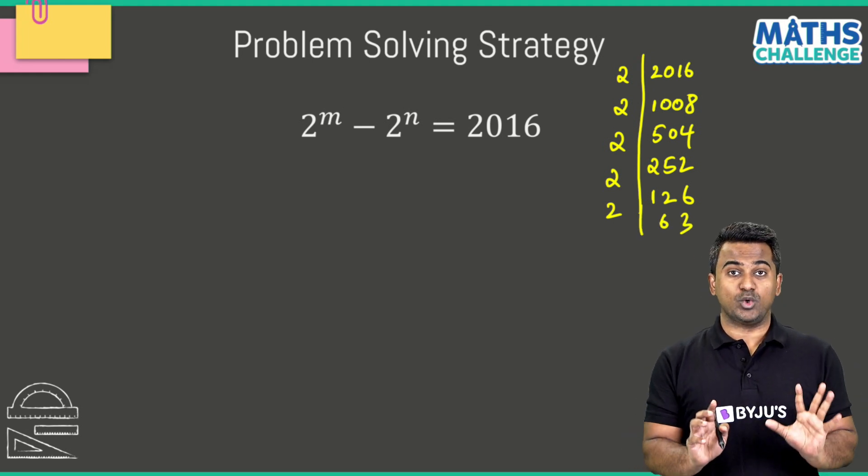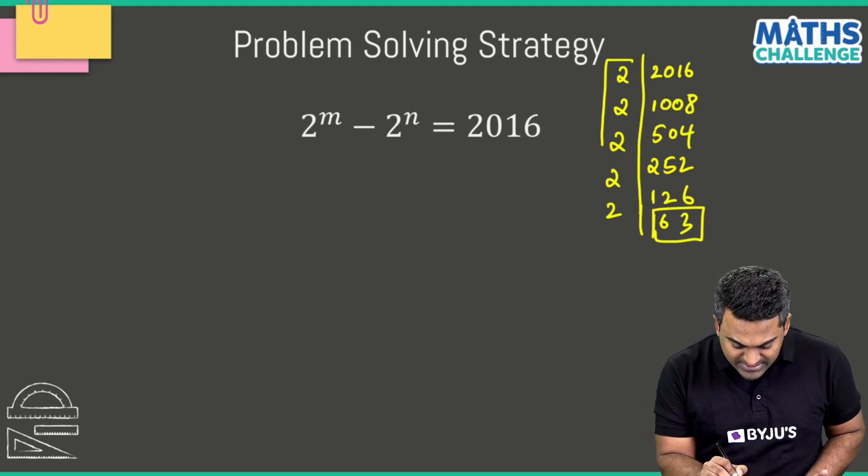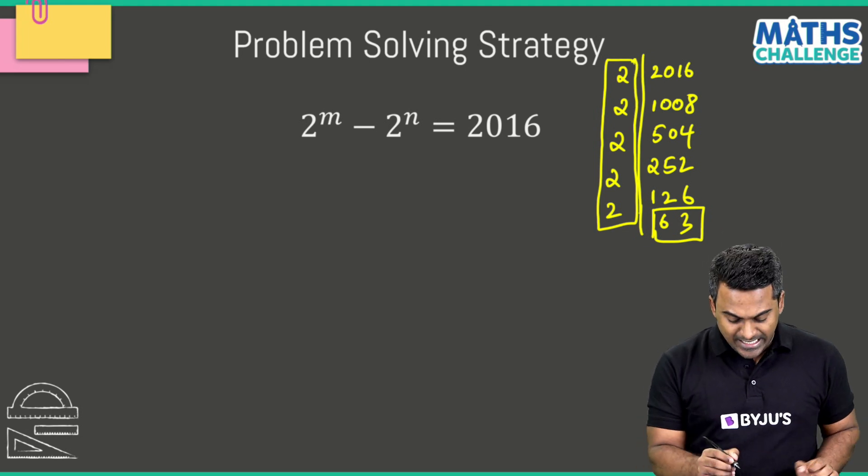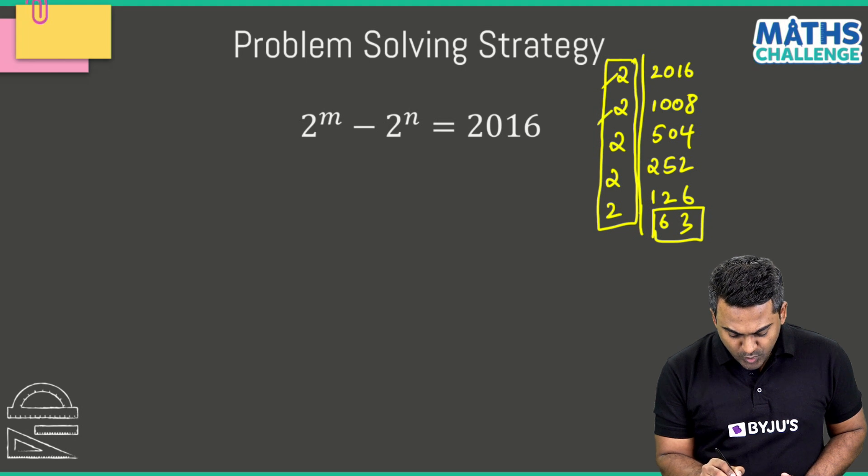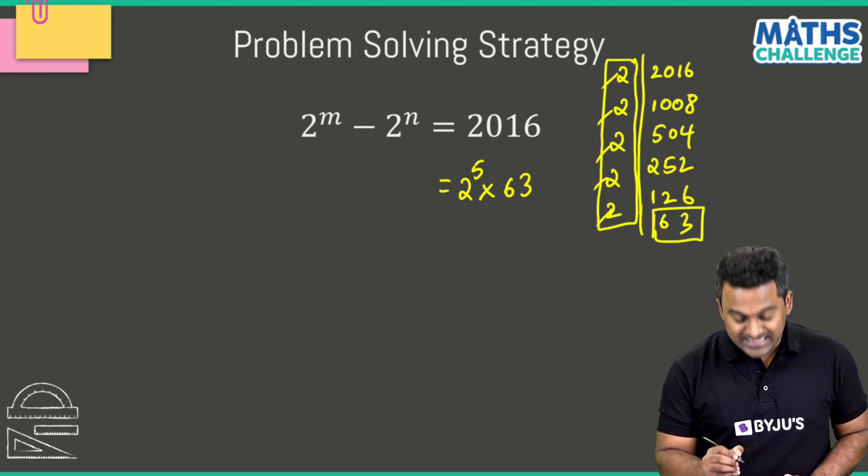126 divided by 2 is 63, which is not divisible by 2 so I'm going to stop there. 2016 can be expressed as the product of these 2s with 63. How many 2s are there? 1, 2, 3, 4, 5. So 2016 can be written as 2^5 multiplied with 63.